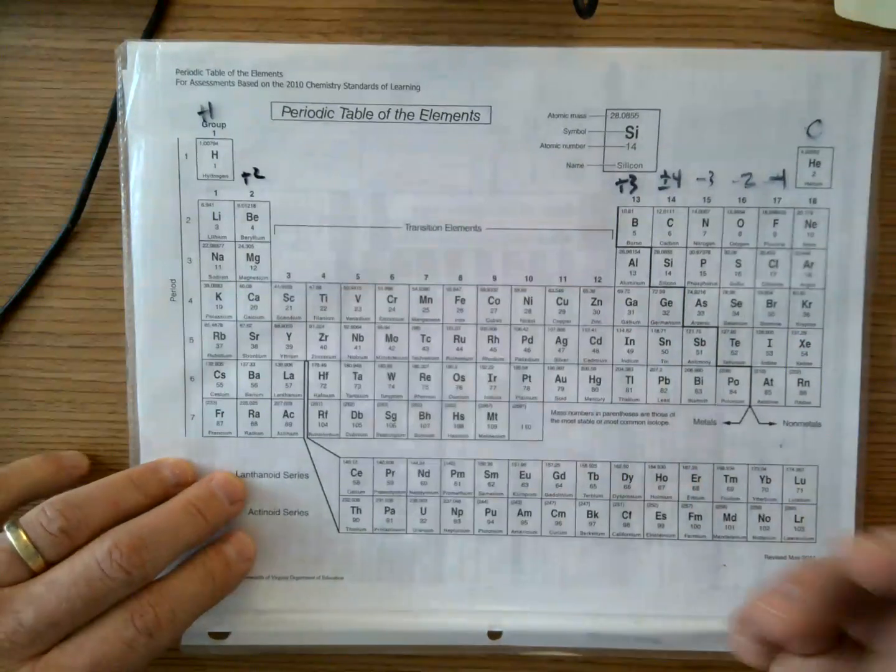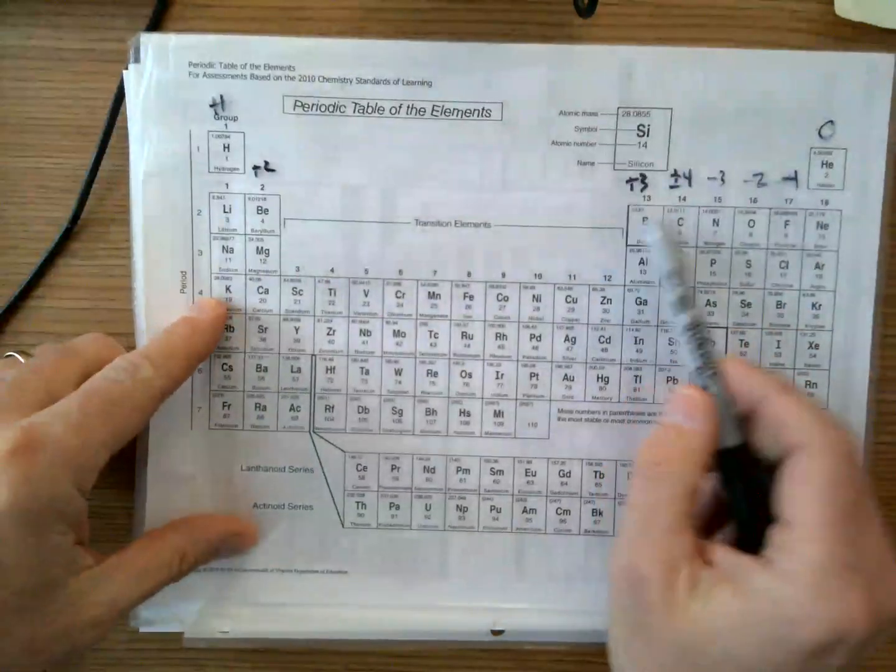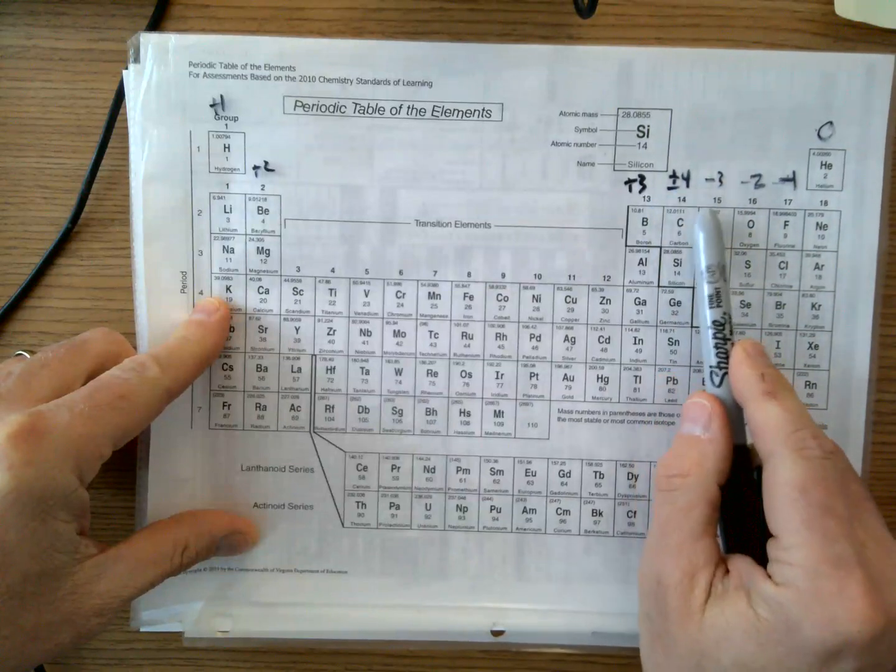And then these could do gain or lose four electrons. Depending on if it's a positive four, you write it first. If it's a negative four charge, you write it second.